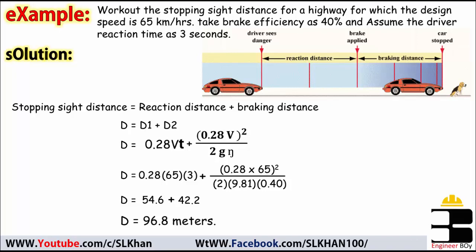So 96.8 meters road line should always be visible for the driver or to the driver for safe travel. So this is how we determine the stopping sight distance.